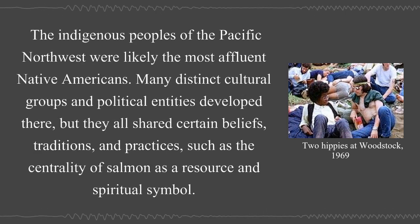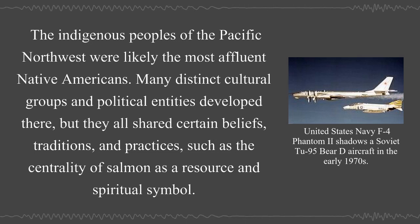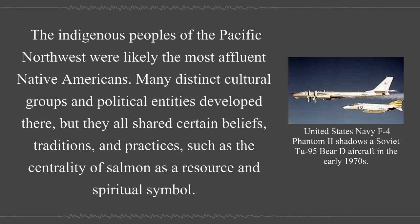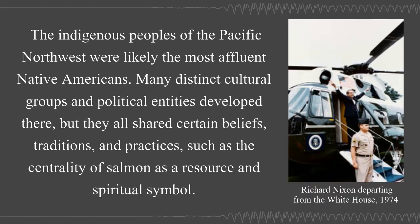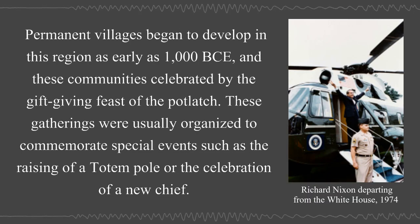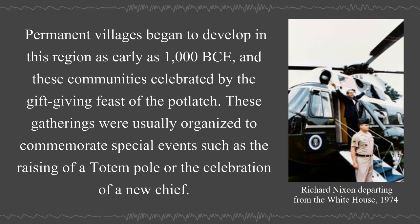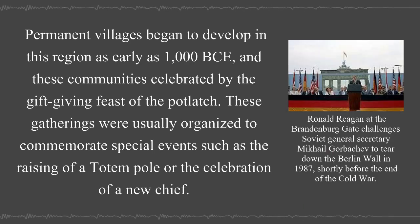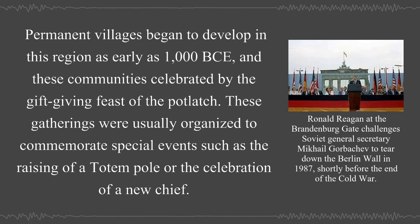The indigenous peoples of the Pacific Northwest were likely the most affluent Native Americans. Many distinct cultural groups and political entities developed there, but they all shared certain beliefs, traditions, and practices, such as the centrality of salmon as a resource and spiritual symbol. Permanent villages began to develop in this region as early as 1000 BCE, and these communities celebrated with the gift-giving Feast of the Potlatch, usually organized to commemorate special events such as the raising of a totem pole or the celebration of a new chief.